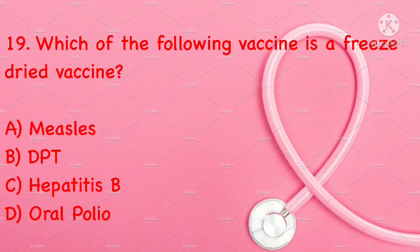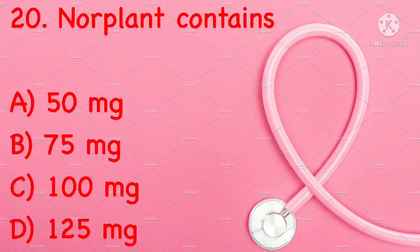Which of the following vaccines is a freeze-dried vaccine? Measles, DPT, hepatitis B, or oral polio. Correct answer is C: hepatitis B.